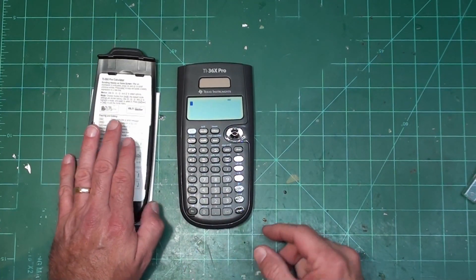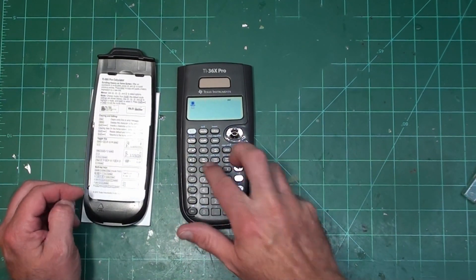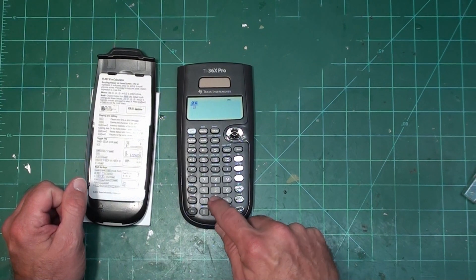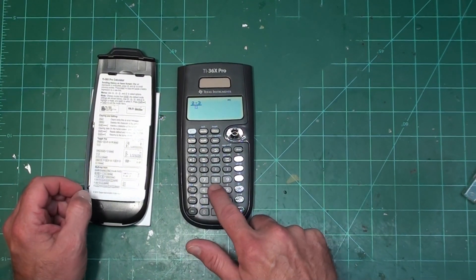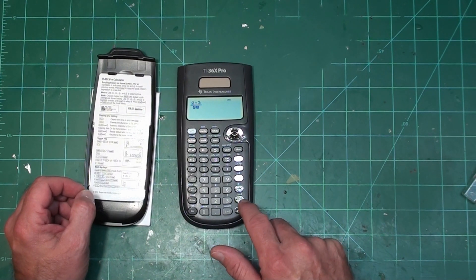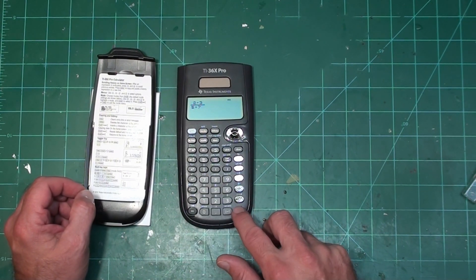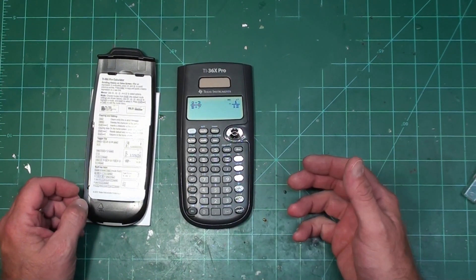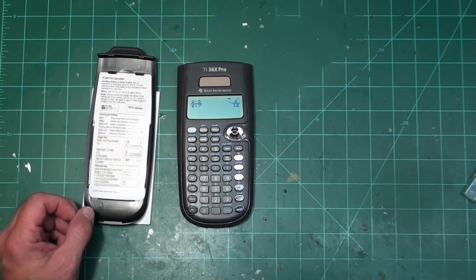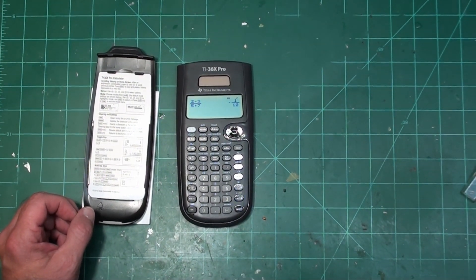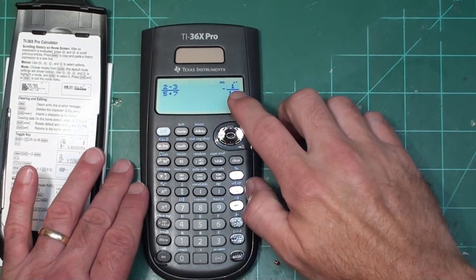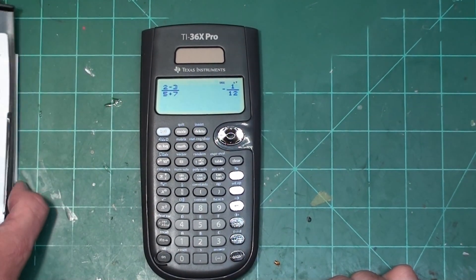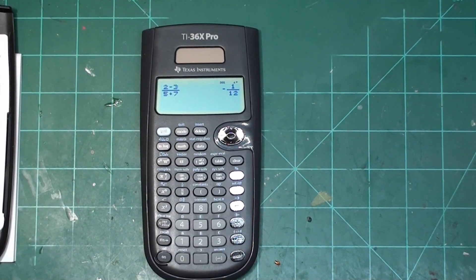Let's turn this thing on. Now, you get a big screen. You can hit the fraction button and you can type two minus three, hit the down button and put five plus seven, hit enter. Let me zoom this in because that is not going to do good for a lot of you. So we can see that it left me the answer negative one twelfth.